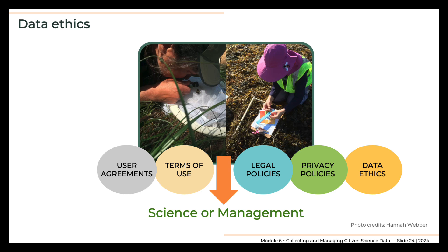Our final topic regarding citizen science data is data ethics. Some aspects of ethics are interwoven throughout this module; others are beyond its scope. Citizen science data ethics is an emerging field being thoughtfully developed through the efforts of many interested parties. For more information, refer to the data ethics in the participatory sciences toolkit found on the website of the Association for the Advancement of Participatory Sciences. The data ethics toolkit aims to help project leaders understand their role as data handlers in identifying, satisfying, and balancing ethical obligations of a project to participants, partners, science, and society.